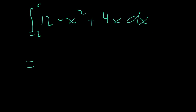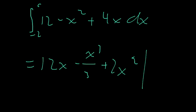Which is equal to 12x minus x cubed over 3 plus 4x squared over 2, which is just 2x squared. And that's going to be from negative 2 to 0.